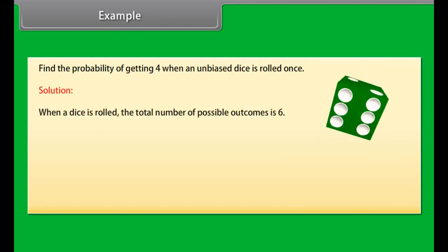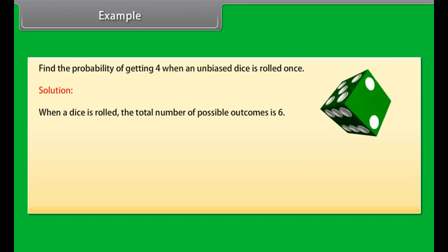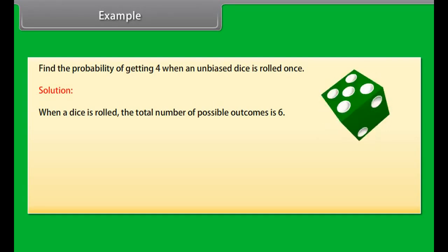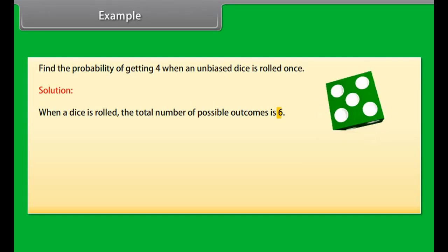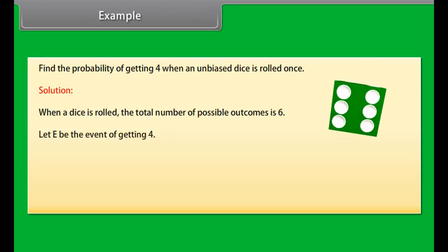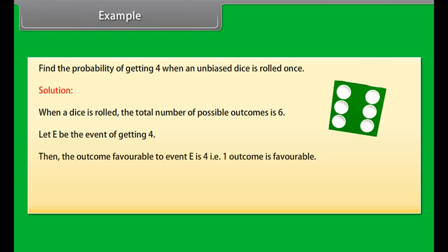Solution: When a dice is rolled, the total number of possible outcomes is 6. Let E be the event of getting 4. Then the outcome favorable to event E is 4. That is, one outcome is favorable. Hence, the probability of event E is equal to 1 upon 6.